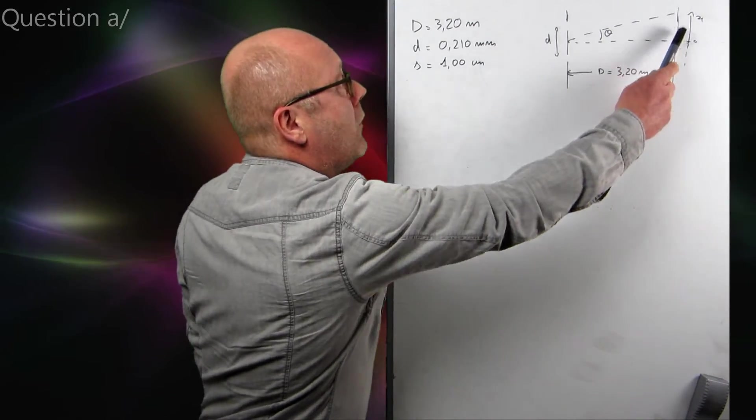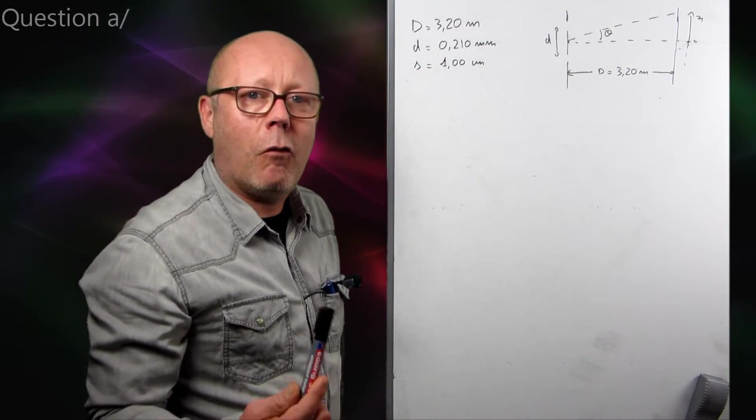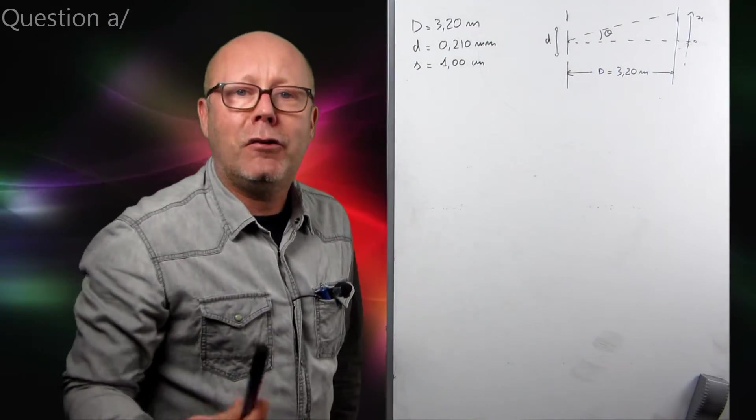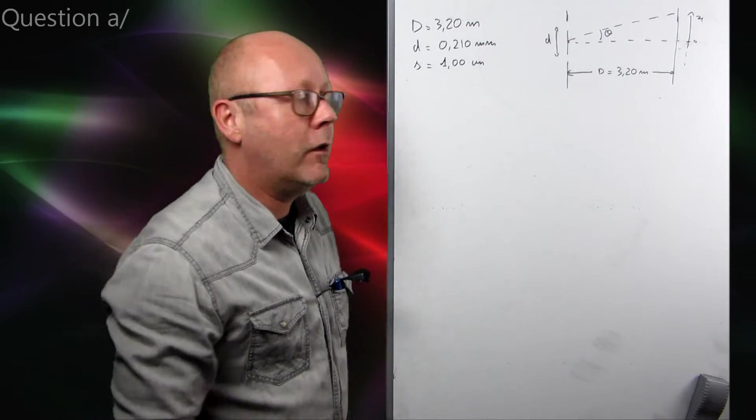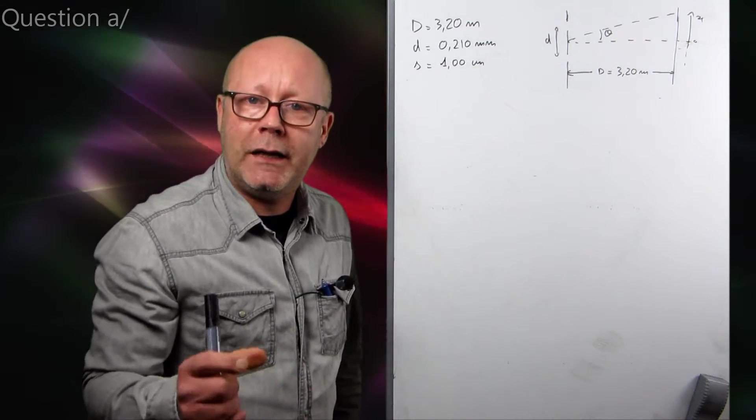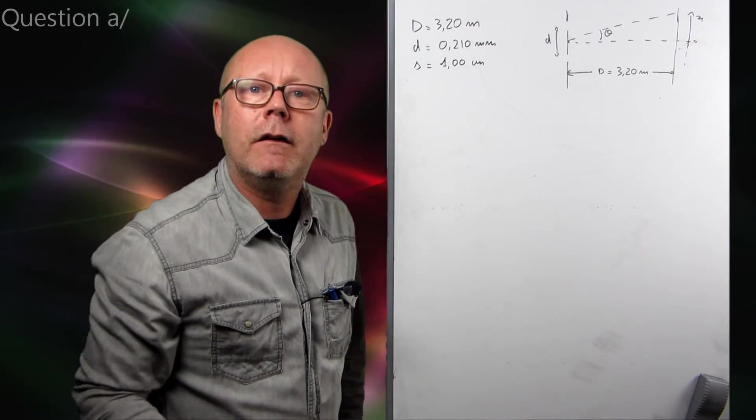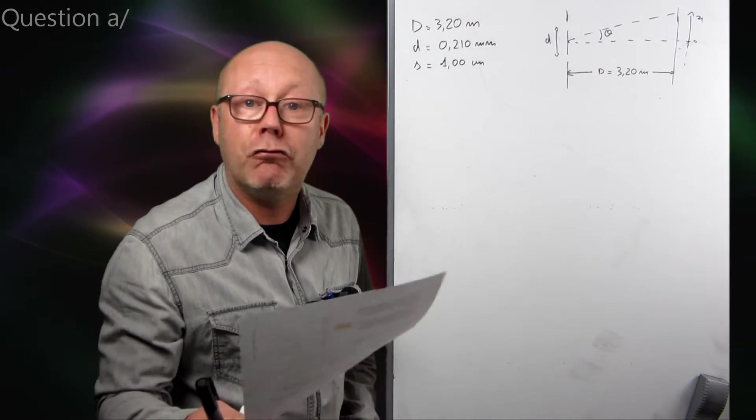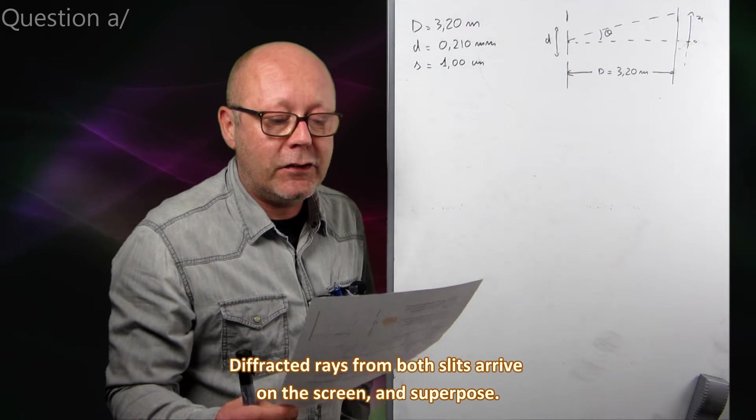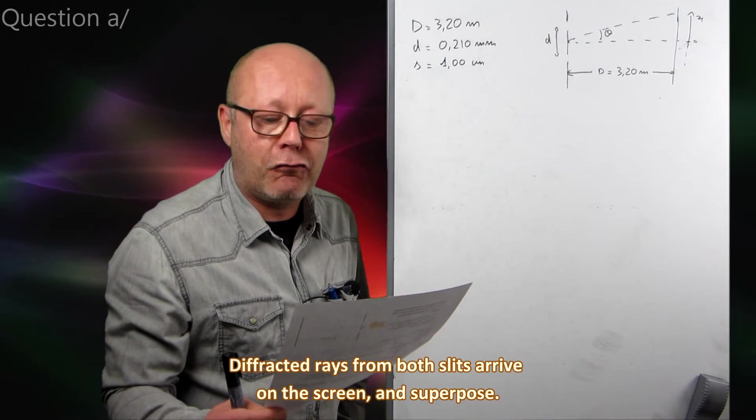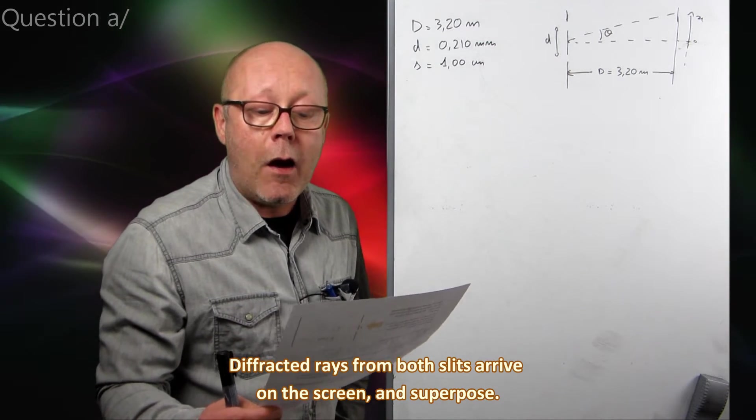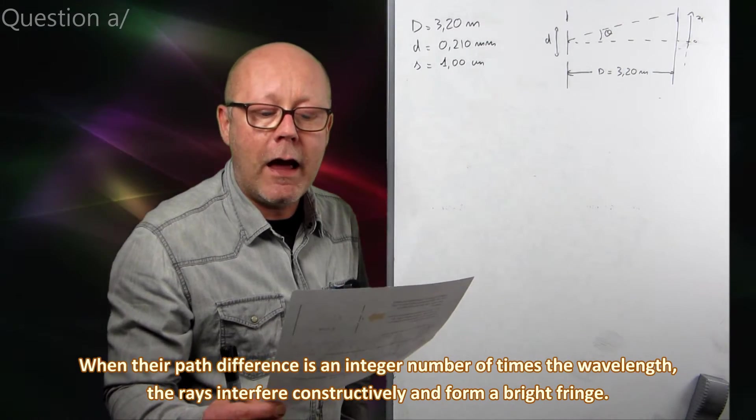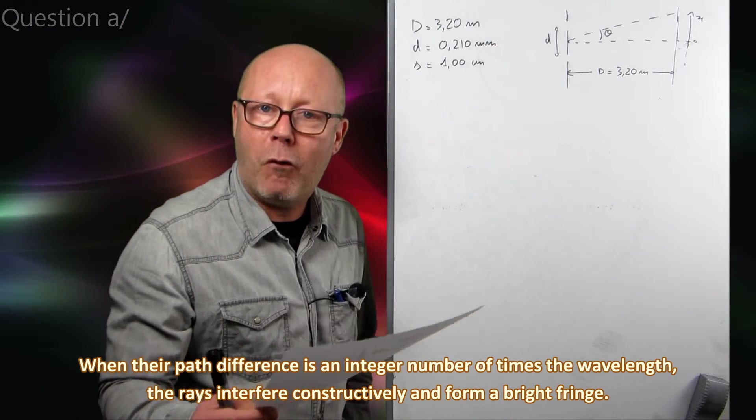So, where will the fringe form? They will form where the two rays that meet interfere constructively. And for that to happen, the path difference between the two rays needs to be equal to n lambda, an integral number of times the wavelength. So, to get your two marks, this is what you need to write. Diffracted rays from both slits arrive on the screen and superpose. When the path difference is an integral number of times the wavelength n lambda, they interfere constructively and form a bright fringe.